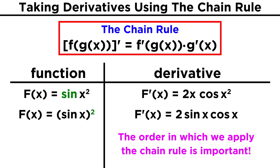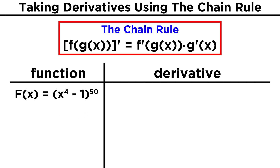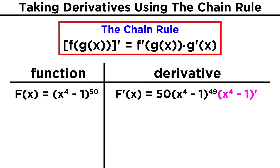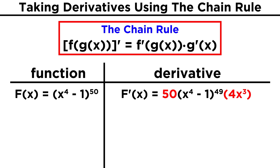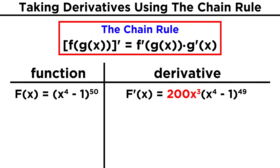It's the derivative of the outer function as applied to the inner function times the derivative of the inner function. Now let's try some other examples. Take the quantity x to the fourth minus one, raised to the fiftieth power. This huge exponent might seem daunting, but let's just apply the chain rule. The outer function is this exponent, so we take the fifty and put it down here, leave what's inside the parentheses just as it is, and reduce the exponent to forty-nine. But then we multiply by the derivative of the inner function, and that will be four x cubed. So combining these terms, we get two hundred x cubed times the quantity x to the fourth minus one, raised to the forty-ninth power.